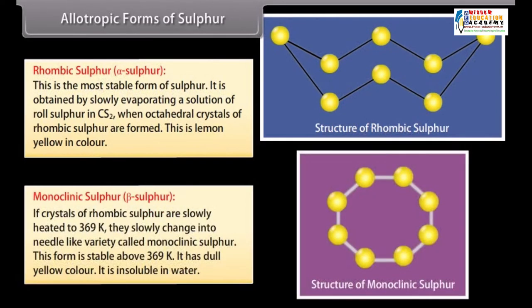If crystals of rhombic sulphur are slowly heated to 369 Kelvin, they slowly change into needle-like variety called monoclinic sulphur. This form is stable above 369 Kelvin. It has dull yellow colour. It is insoluble in water.